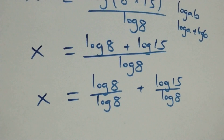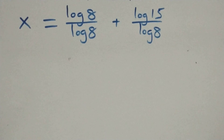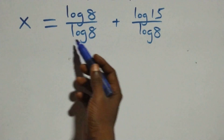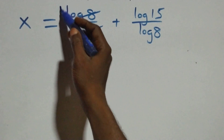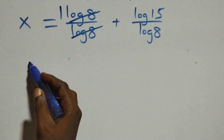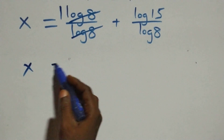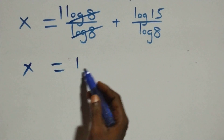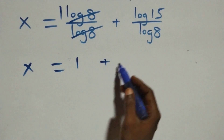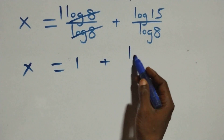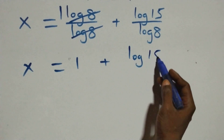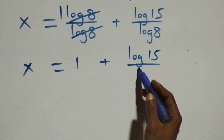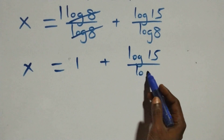The next step: log 8 over log 8 cancels to give 1, which implies x equals 1 plus log 15 over log 8.